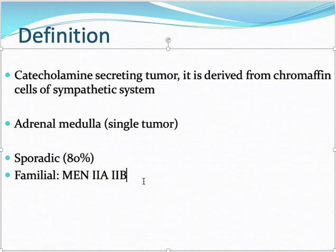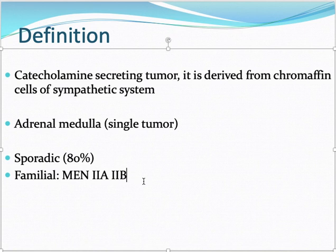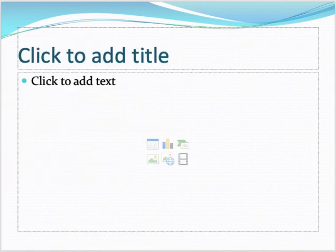There are also certain conditions such as neurofibromatosis and von Hippel-Lindau syndrome in which pheochromocytoma can be present. The exact mechanism of how it keeps producing so many catecholamines is not fully known.